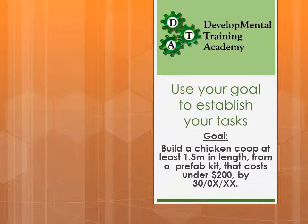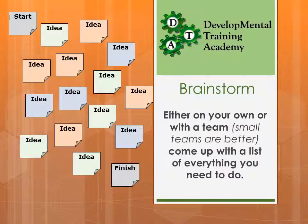The first thing we need to do is use our goal for our project to establish our tasks. We've selected a basic goal here for a very small project. We're going to build a chicken coop which is at least 1.5 meters in length from a prefabricated kit that costs under $200 by a particular date. The first thing we do is brainstorm all the things that we think we need to do to achieve this project.